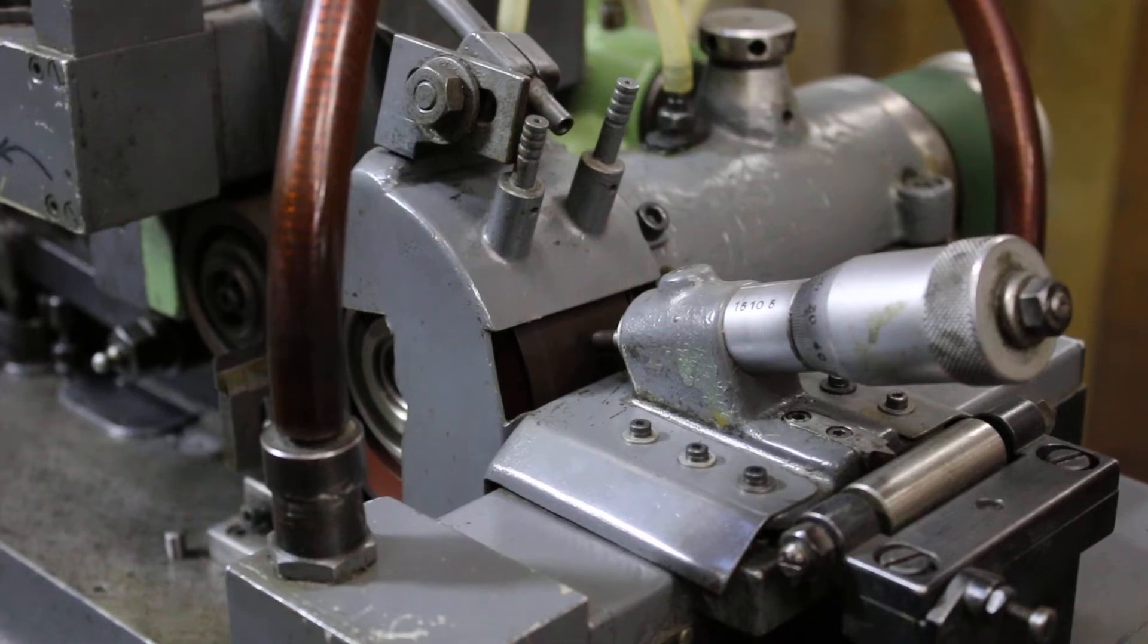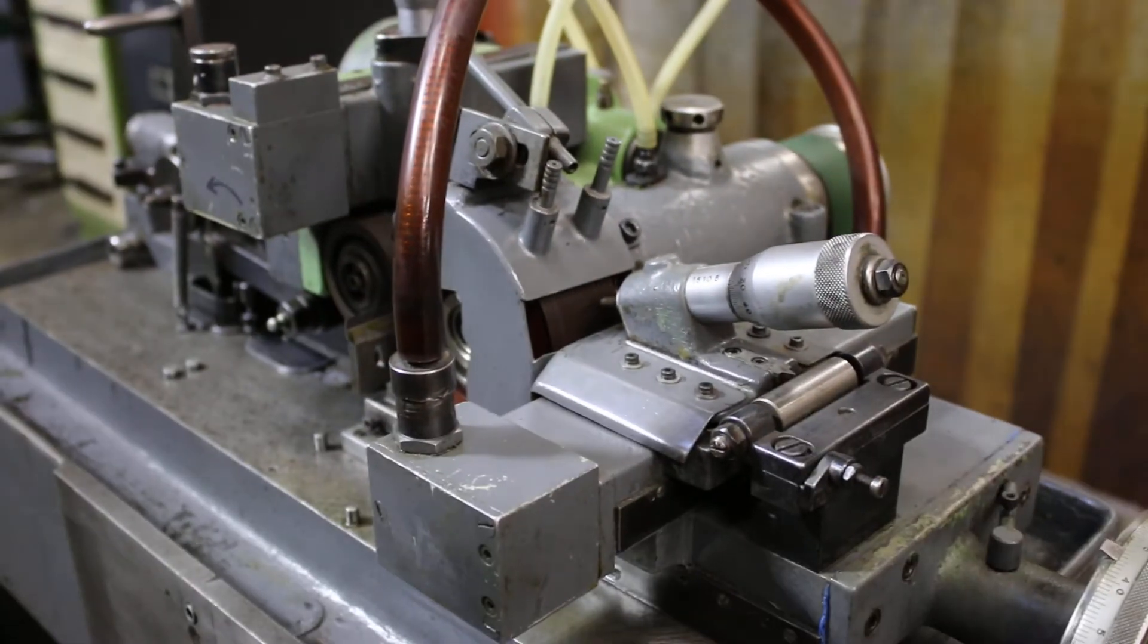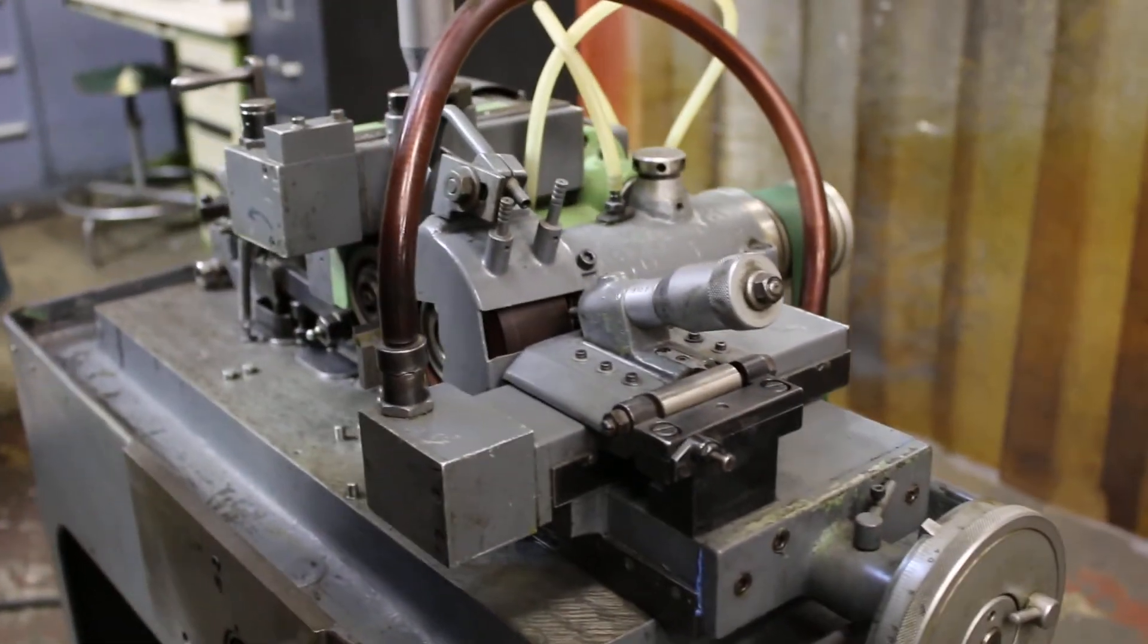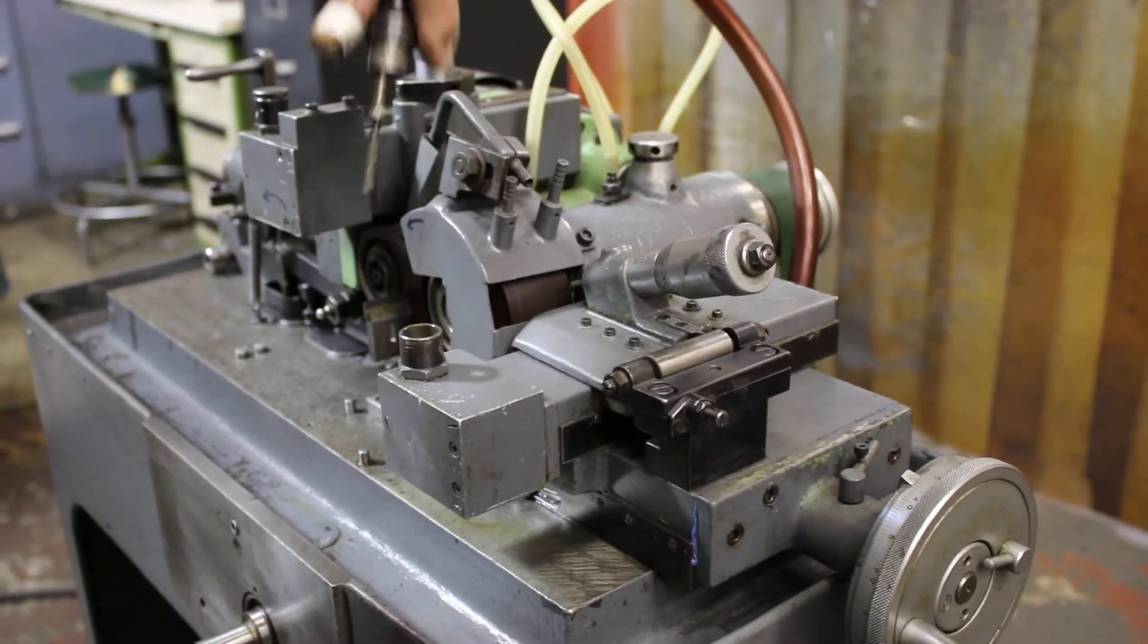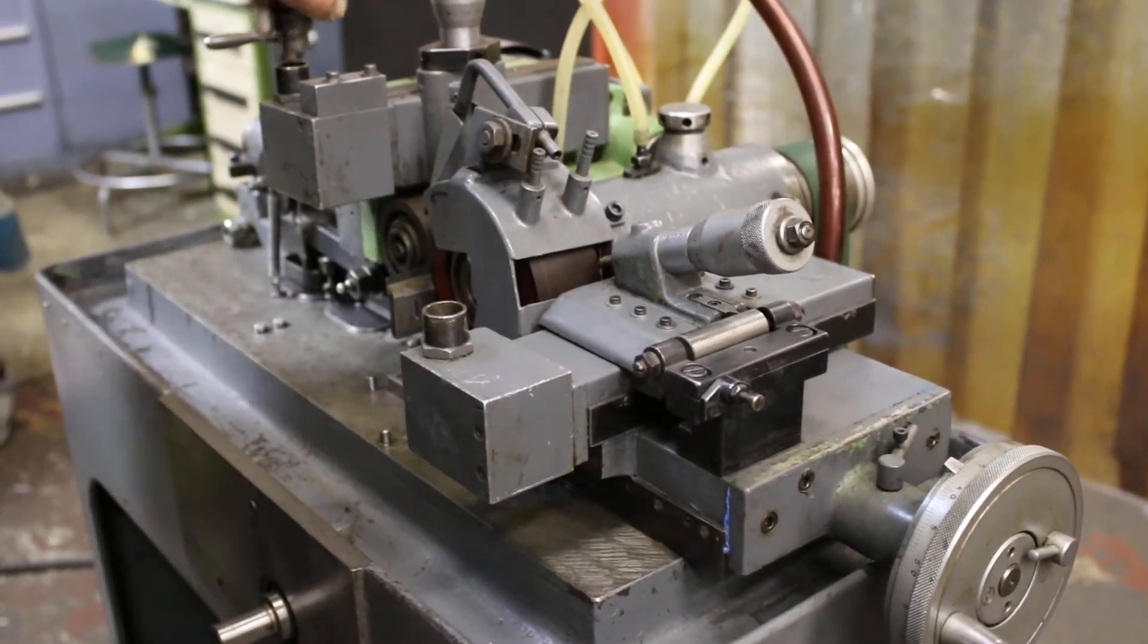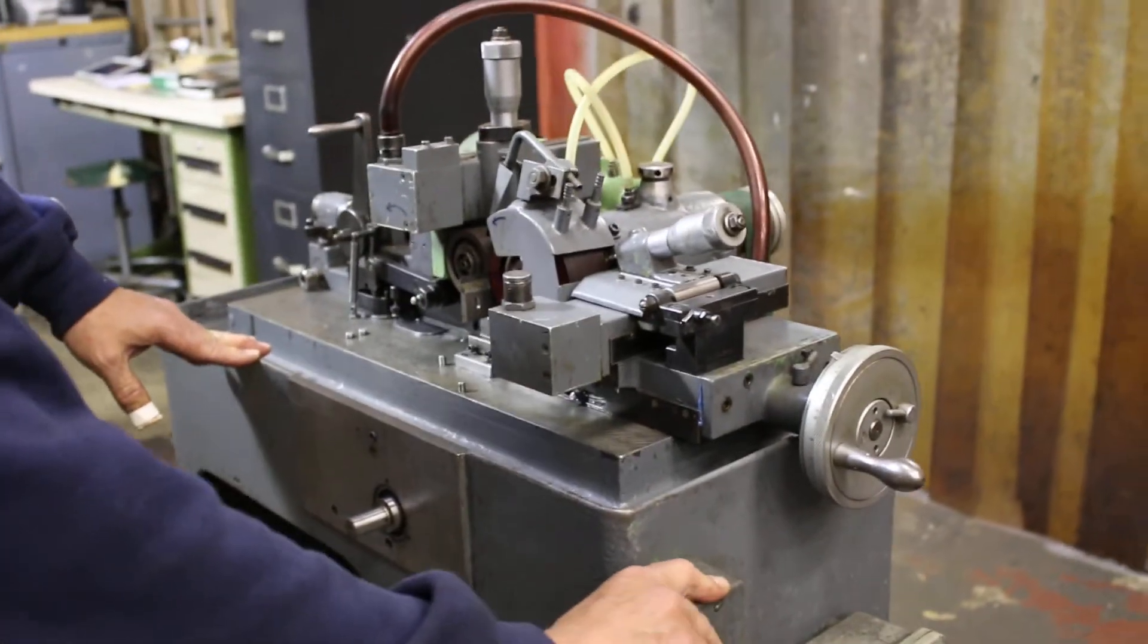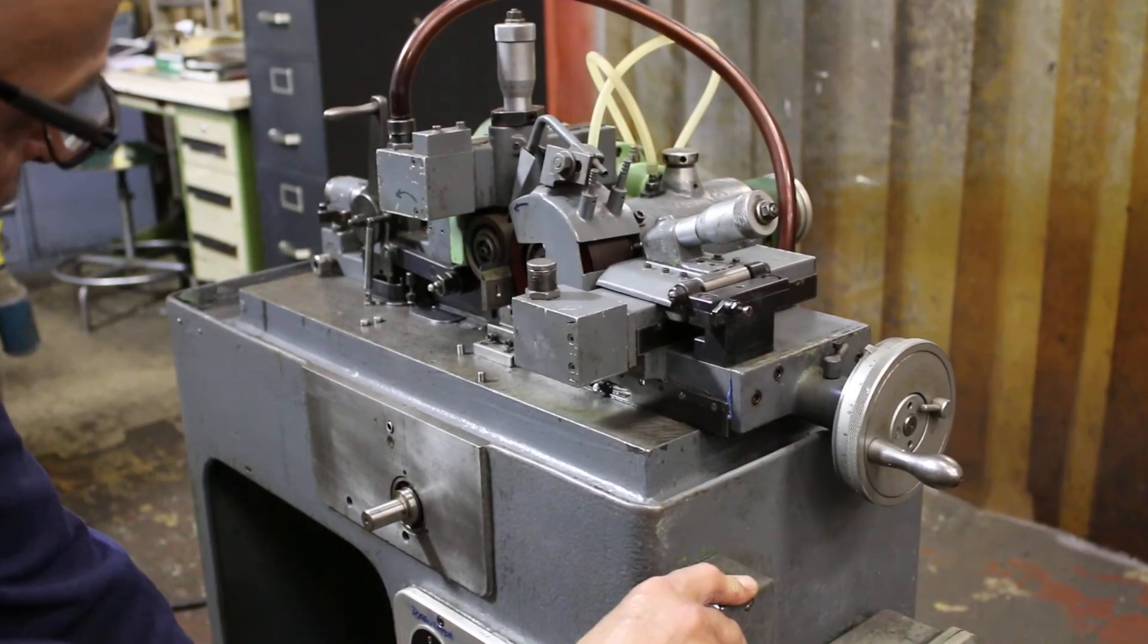And then when you want to reverse it, you reverse your switch and you go back. And when you're done with that, if you need to dress your regulating wheel, this comes out of here and pops down inside of there, and you come across your stone wheel. That's when you can turn your RPM up for a good dress.